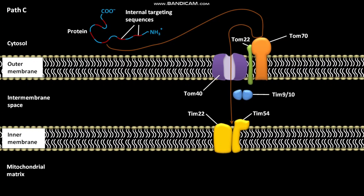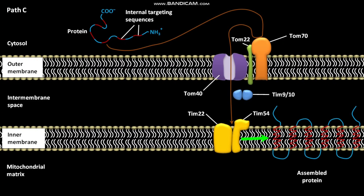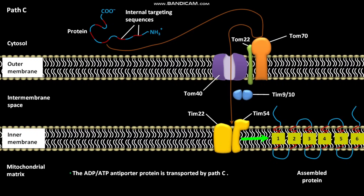As a result, an assembled protein is formed in the inner membrane of mitochondrion. This assembled protein has six membrane-spanning domains. The ADP-ATP antiporter protein is transported by path C.